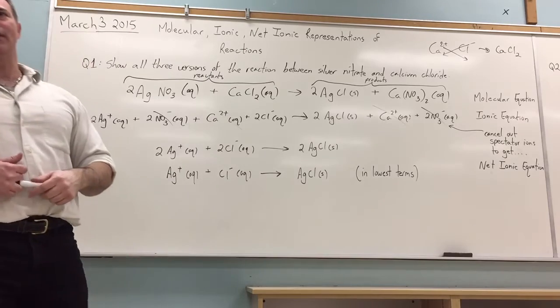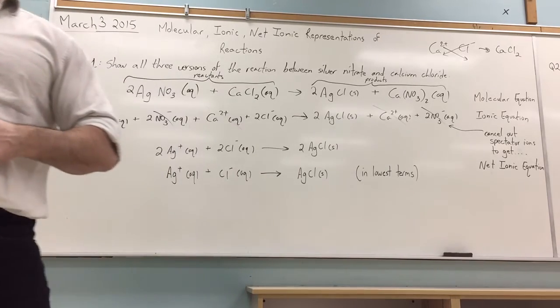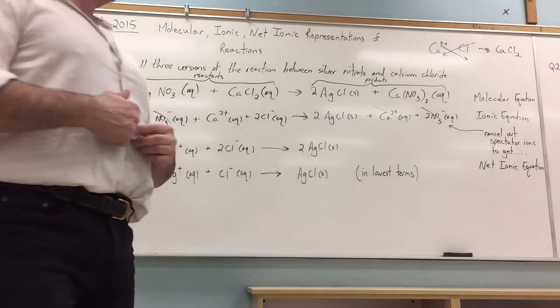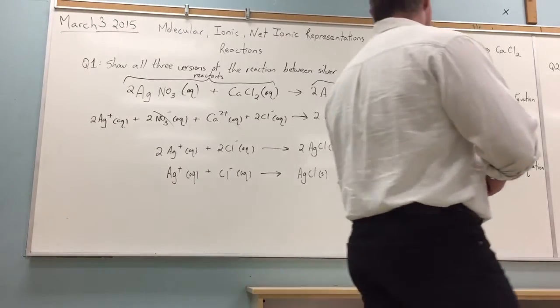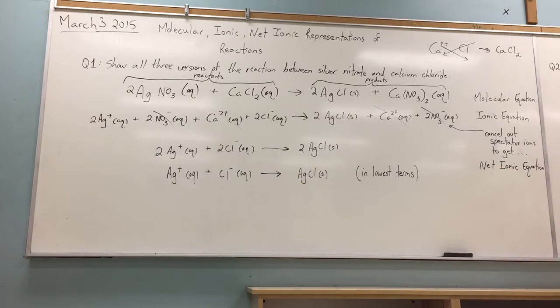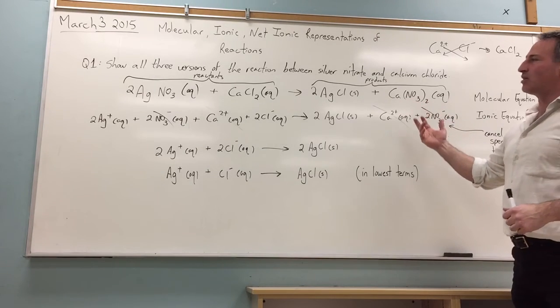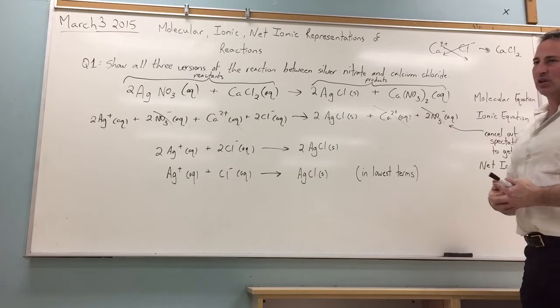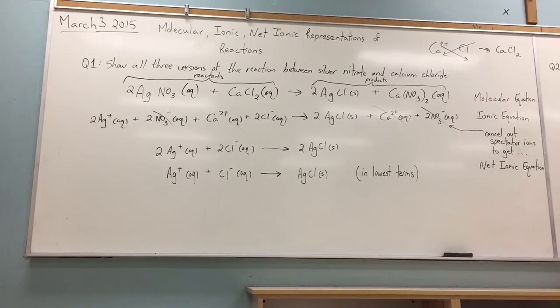Any questions? Yes? How do you know which one of the products is solid? Okay, you have to know ahead of time, how do you know which one of the products is the solid? You have to know ahead of time which one of the two is soluble in aqueous solution. So you can look up what are called solubility tables that will tell you whether something is soluble in water or not.